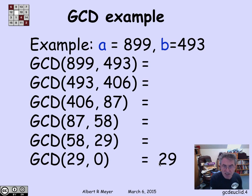The GCD of anything and 0 is that thing. So the GCD of 29 and 0 is 29. I've just found that the GCD of 899 and 493 is 29. And this is a quite fast algorithm, because I keep dividing the numbers that I have by each other, and it gets small fast. We'll be more precise about that in a minute.